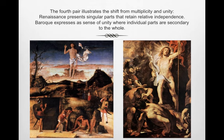The fourth pair illustrates the shift from multiplicity to unity. Renaissance presents singular parts that retain relative independence. The Baroque expresses itself as a sense of unity, where individual parts are secondary to the whole of the composition. Multiplicity feels like a collection of individual elements grouped together in the space of the picture — you feel you could pluck one object right out of the painting. In the unified painting on the right, one senses the objects not necessarily as individual elements, but as coherent parts of a general scene.